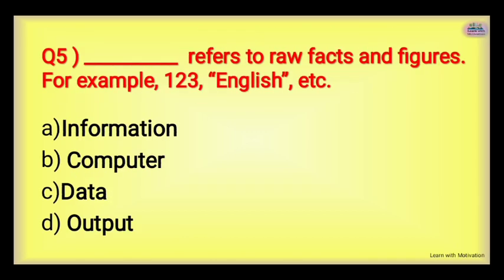Next: Dash refers to raw facts and figures — for example, 1, 2, 3 or English alphabet, etc. We just discussed that what we insert into a computer as raw facts and figures is called what? Options: Information, Computer, Data, or Output. The right answer is Data — Data refers to raw facts and figures, for example 1, 2, 3, or English alphabet, etc.